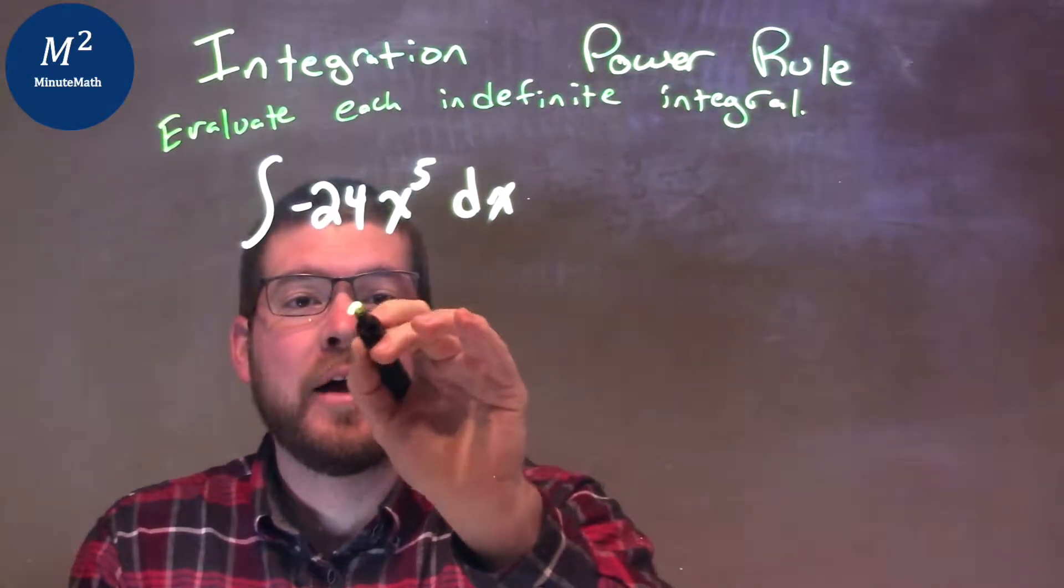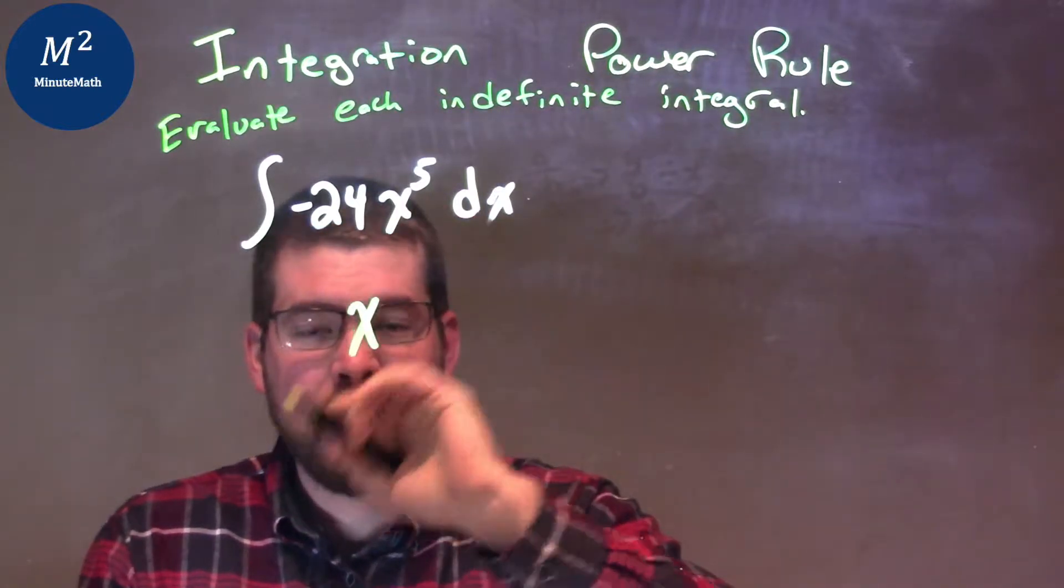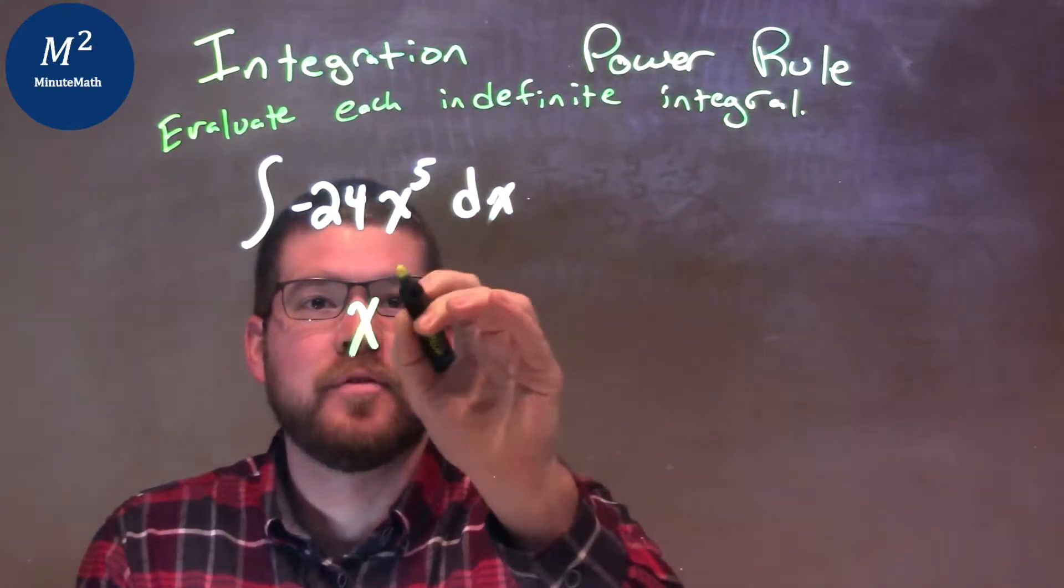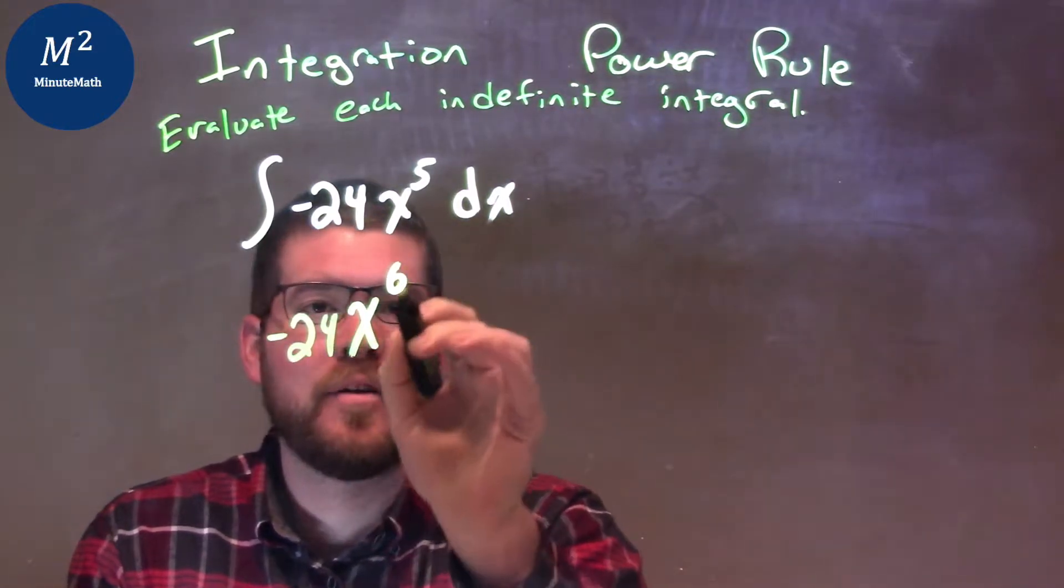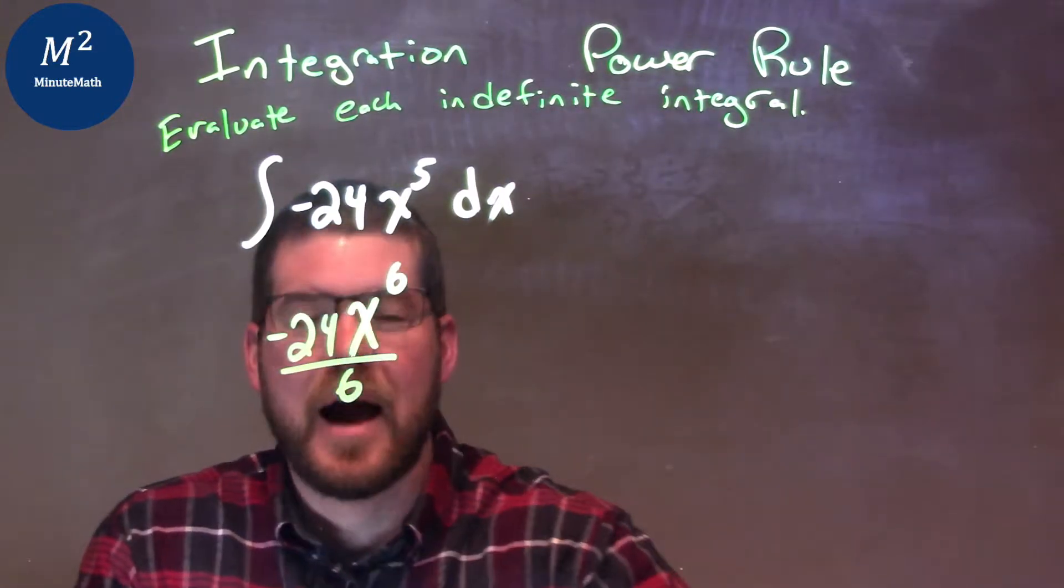So, I have x, instead of subtracting, I'm going to add one. So I'm going to add 6th power. I'm going to leave the constant out front, negative 24, but I'm going to divide by that 6th power.